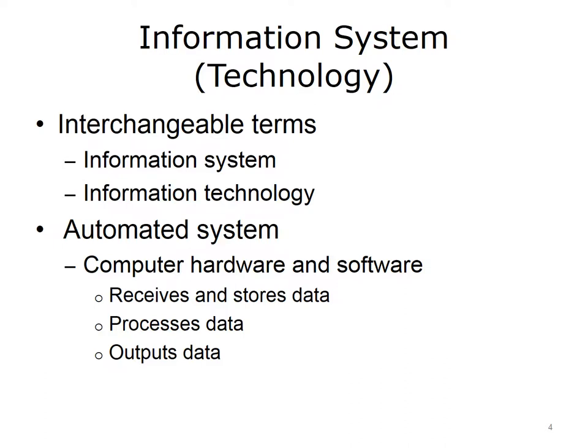The next definition in the series of terms closely related to information management and informatics is information system or technology. AHIMA defines information system as an automated system that uses computer hardware and software to record, manipulate, store, recover, and disseminate data — a system that receives and processes input and provides output, often used interchangeably with information technology, IT. When you think of information technology, some things that should come to mind are computer networks, database and systems administration, security, and programming.